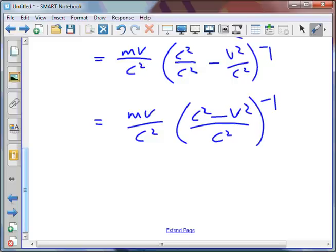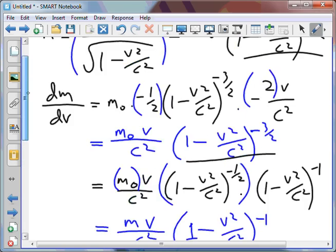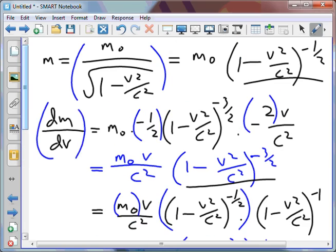I could get the reciprocal of this and multiply. It would look something like this. And in effect this would cancel out with this, all equaling dm dv.